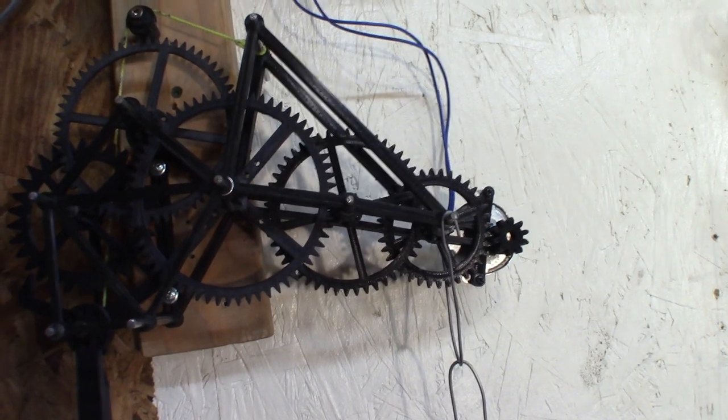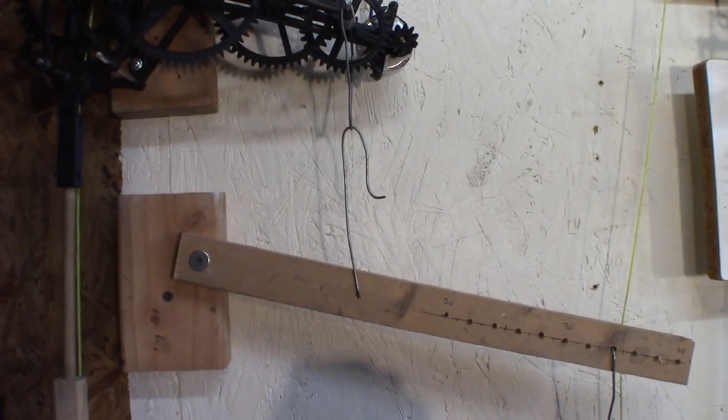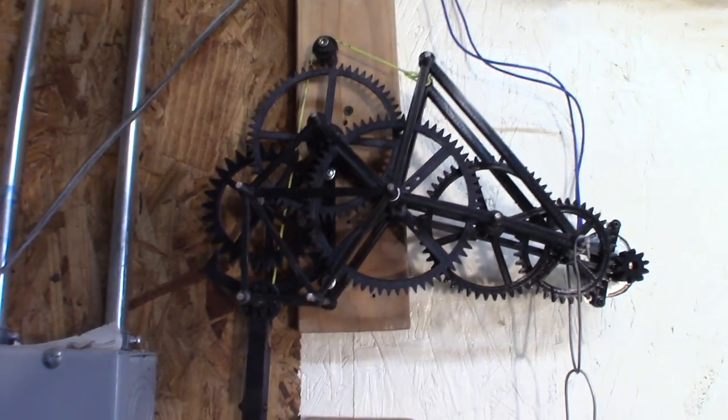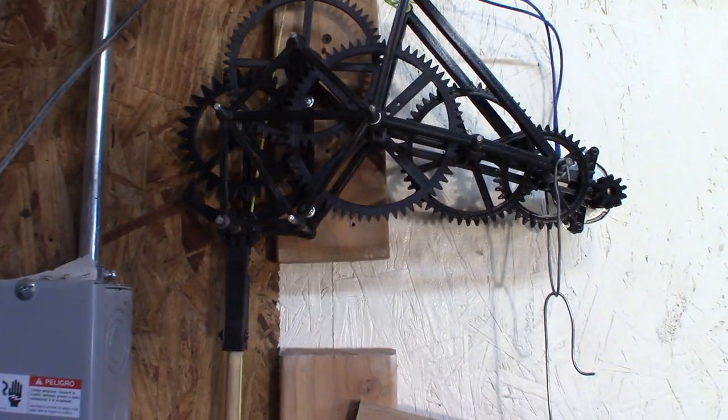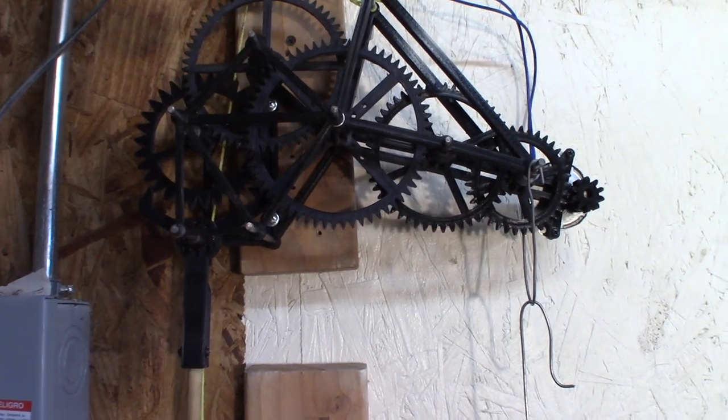If the clock goes too fast, the weight will drop and it will pull the weight at the end of the pendulum. Shorten up the pendulum so the clock can speed up.